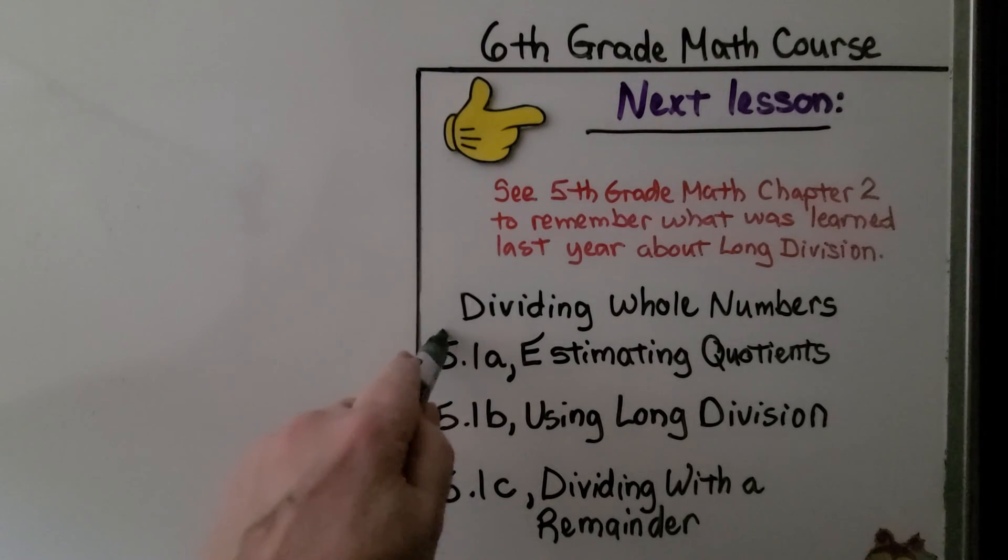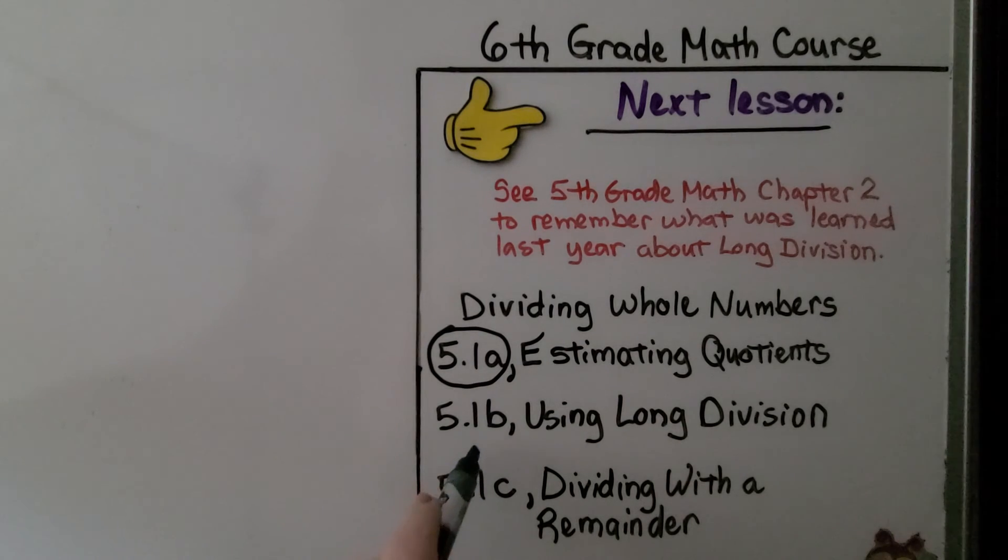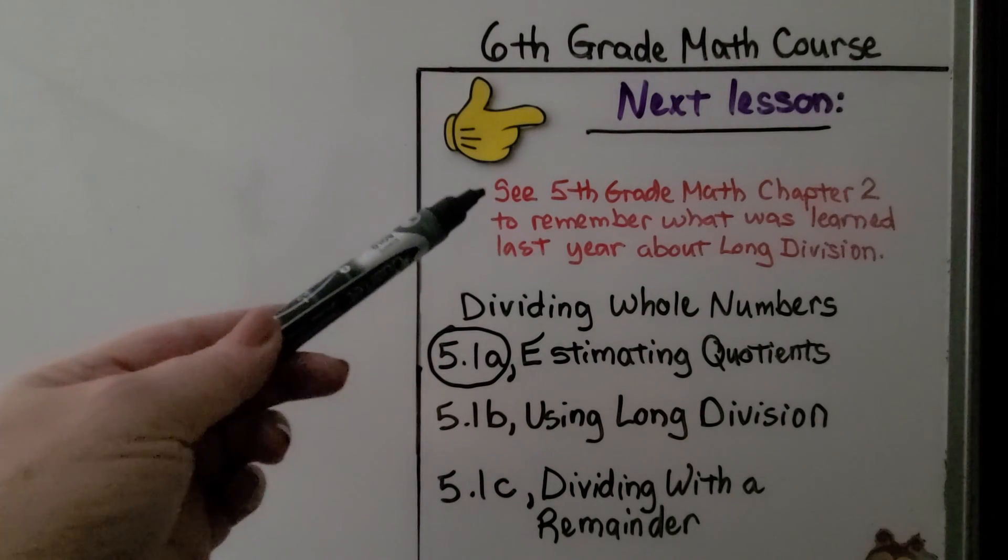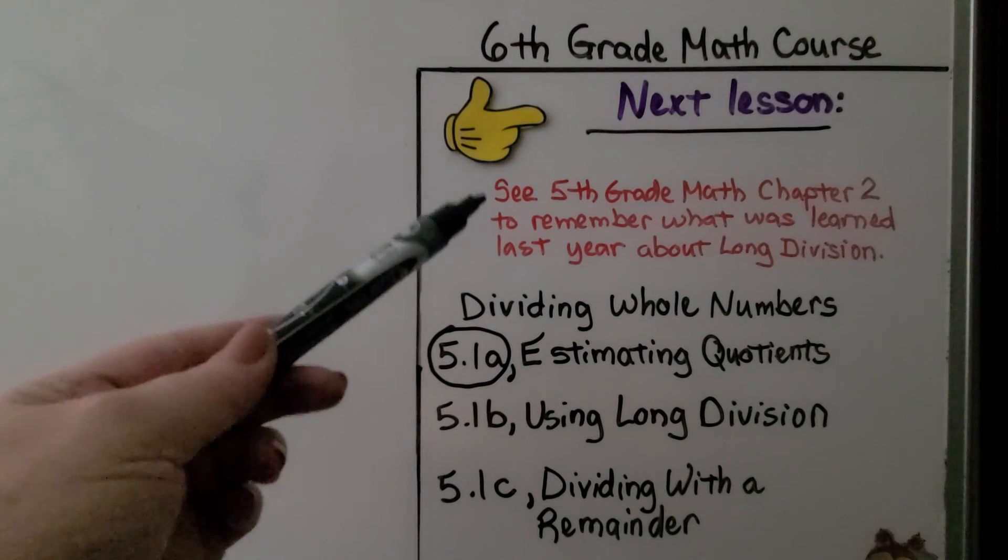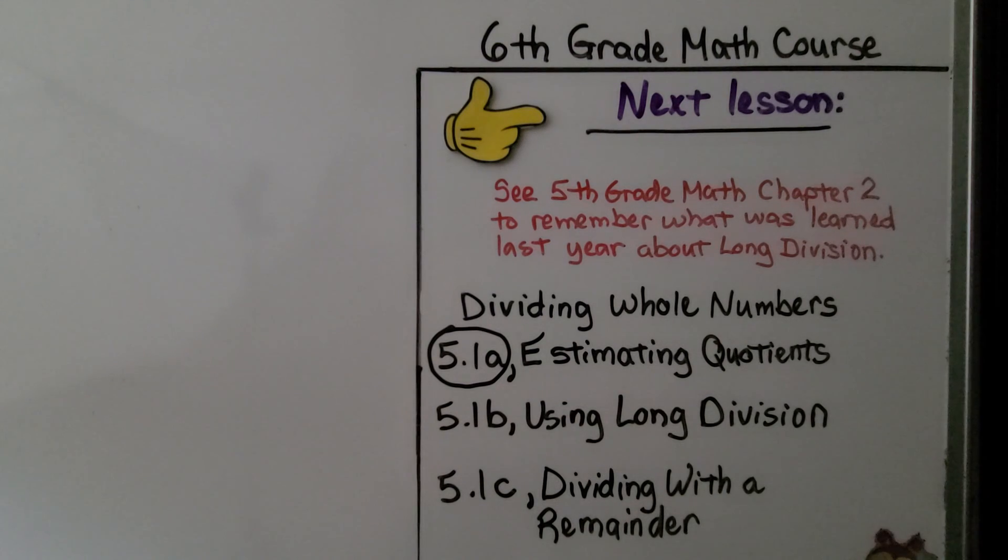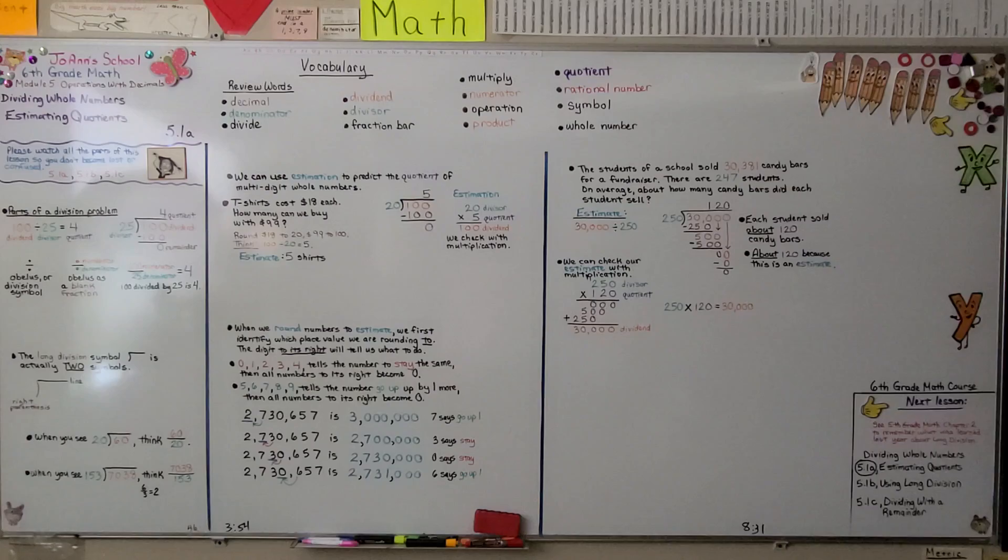Now, we're finished with this lesson. We're going to move on to 5.1b and talk about using long division for exact answers, for exact quotients. Now, I'm going to have links to 5th grade math chapter 2, so you can remember what was learned last year about long division if you're very rusty and you got lost a little bit during this video. And you can review what you should have learned last year, and that'll help you breeze through this chapter. Have a wonderful day. Remember to hit the like button, and I'll see you next time. Bye.